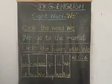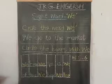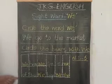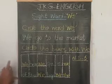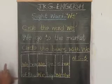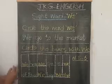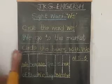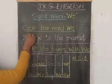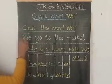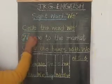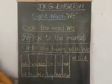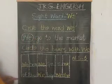Now what you have to do? You have to circle the word 'we' in this sentence. You have to see where I have written 'we' and then circle that word. Here I have written 'we', so you will circle the word like this.